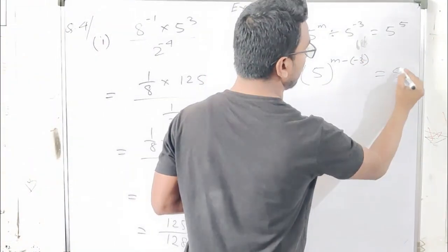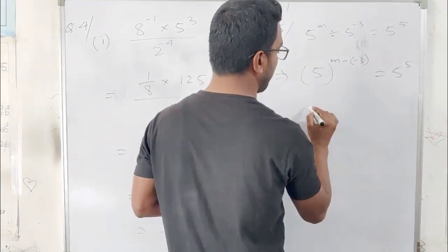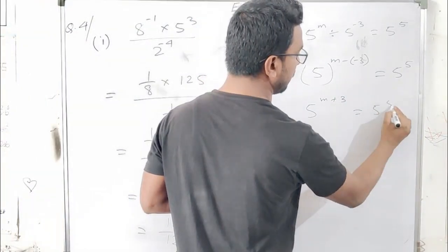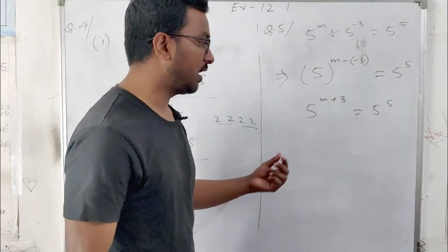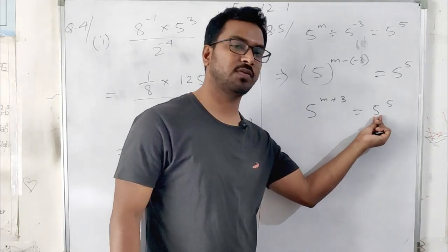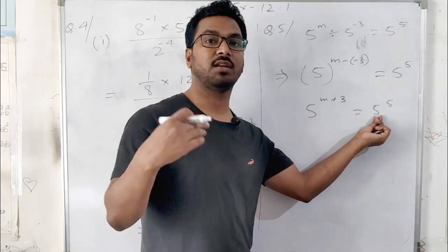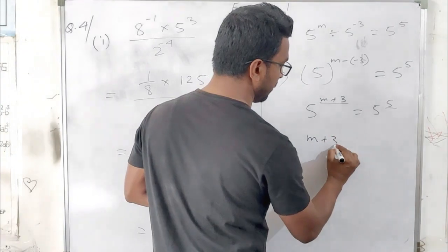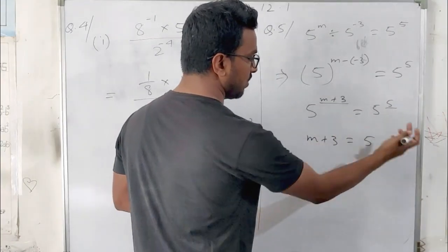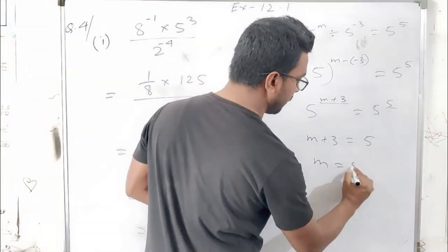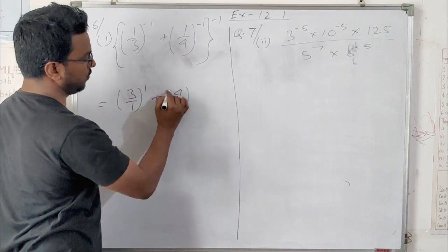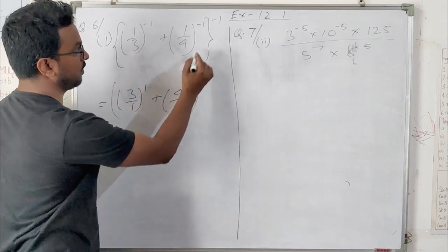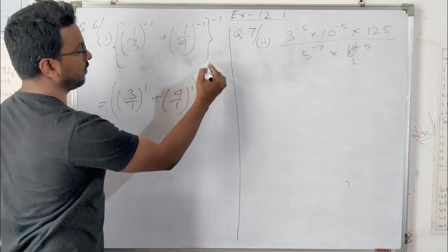For the next part, the exponents are negative, so we take reciprocals to make them positive. This gives 2 to the power 2 plus 3 to the power 2 plus 4 to the power 2. That is 4 plus 9 plus 16. So 16 plus 9 is 25, and 25 plus 4 gives the answer 29.